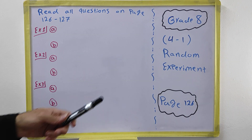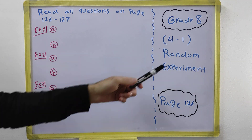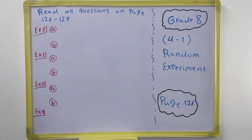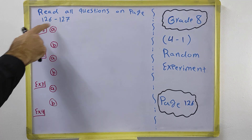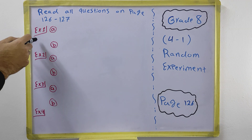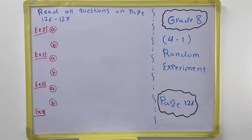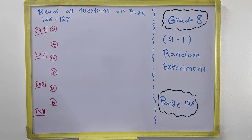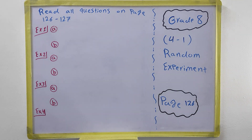Hi everyone. In this video we have Grade 8, Chapter 4, Section 1: Random Experiments, which is on page 126. Because the questions are too many for writing, we need to just read the questions from the book on pages 126 and 127. This covers examples one through four about random experiments, where we study the possible outcomes for an experiment in probability.